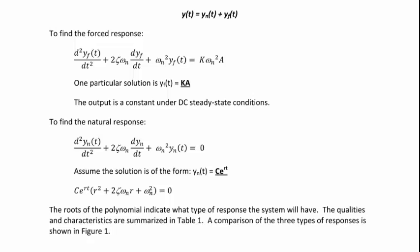To find the natural response, we substitute y_n of t into our governing differential equation and get: the second derivative of y_n of t, plus 2 zeta omega_n times the first derivative of y_n of t, plus omega_n squared times y_n of t equals zero. We assume the solution has the form c e to the rt, and when we take the second and first derivatives and substitute in, we simplify to: c e to the rt times r squared plus 2 zeta omega_n r plus omega_n squared equals zero.